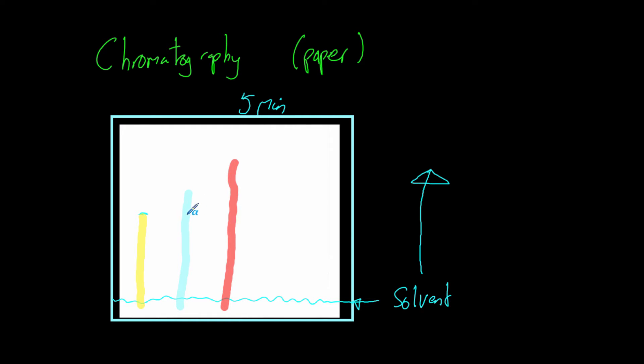This blue line here, or this dye, has moved further. Also likes to take quite a firm hold on the paper, but the interaction with the paper is not as strong as the yellow one, so it's dragged further. And now this red one over here cannot grip the paper very well and so is forced to drag way up the paper as the solvent rises up the paper. And so that is why you've got these varying positions.